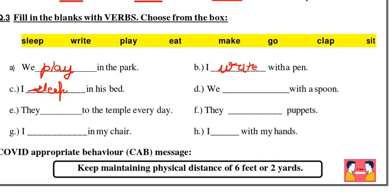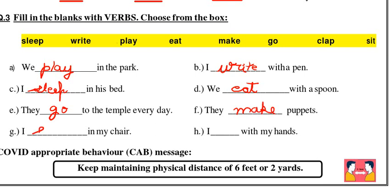'We dash with a spoon' — we eat with a spoon, so the answer is 'eat.' 'They dash to the temple every day' — they go to the temple every day, so the answer is 'go.' 'They dash the puppets' — they make the puppets, so we write 'make.' 'I dash in my chair' — we have 'sit' in the verb box, so: 'I sit in my chair.' Finally, 'I dash with my hands' — I clap with my hands. So 'clap' is the last answer.